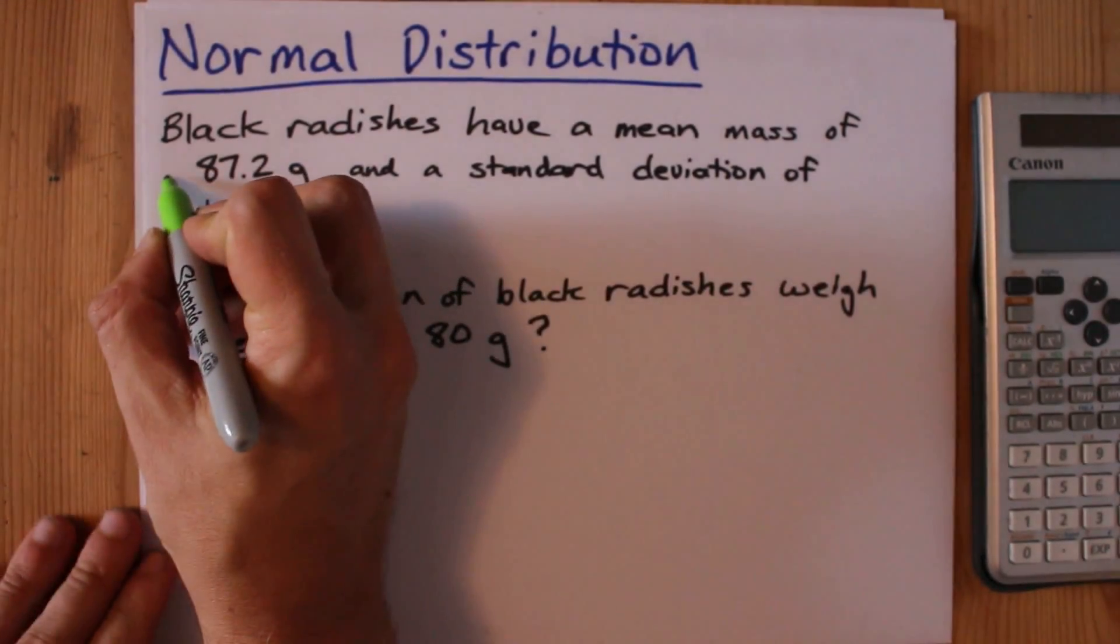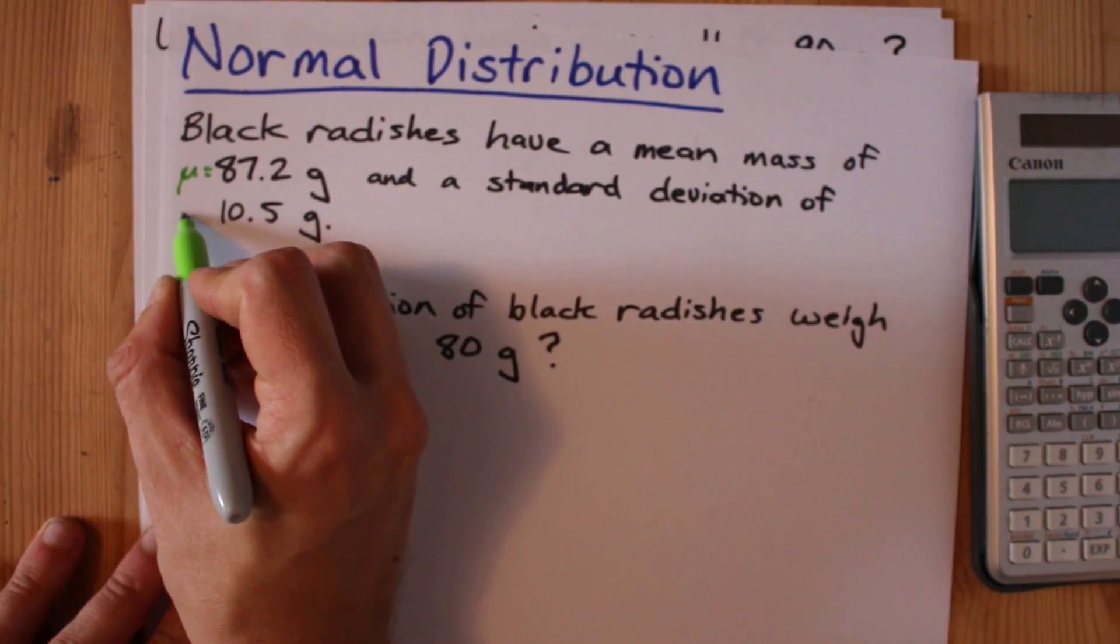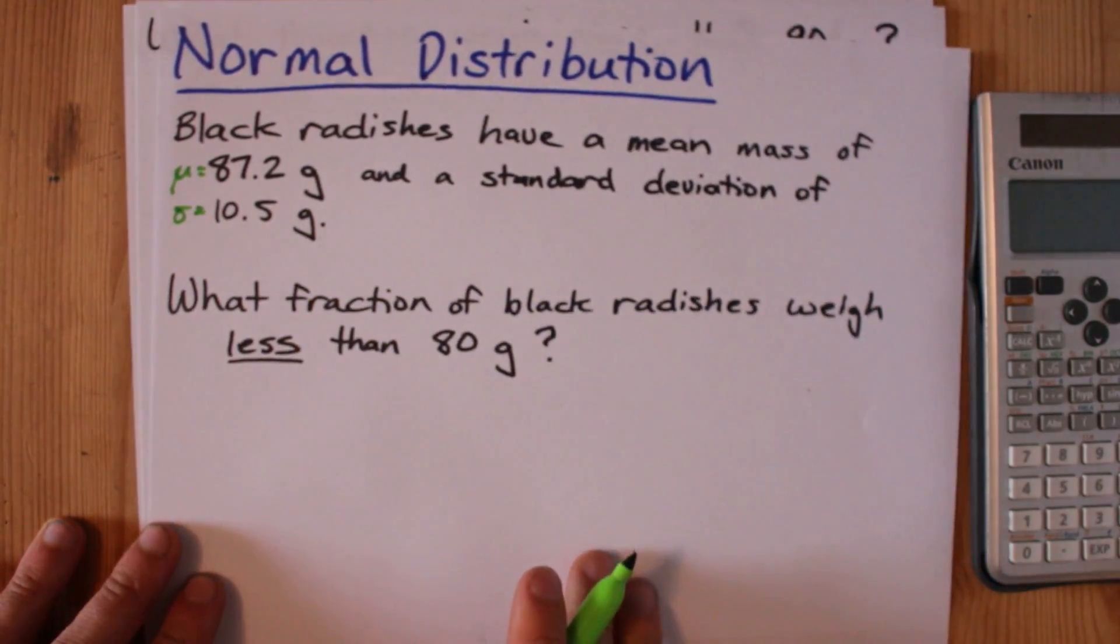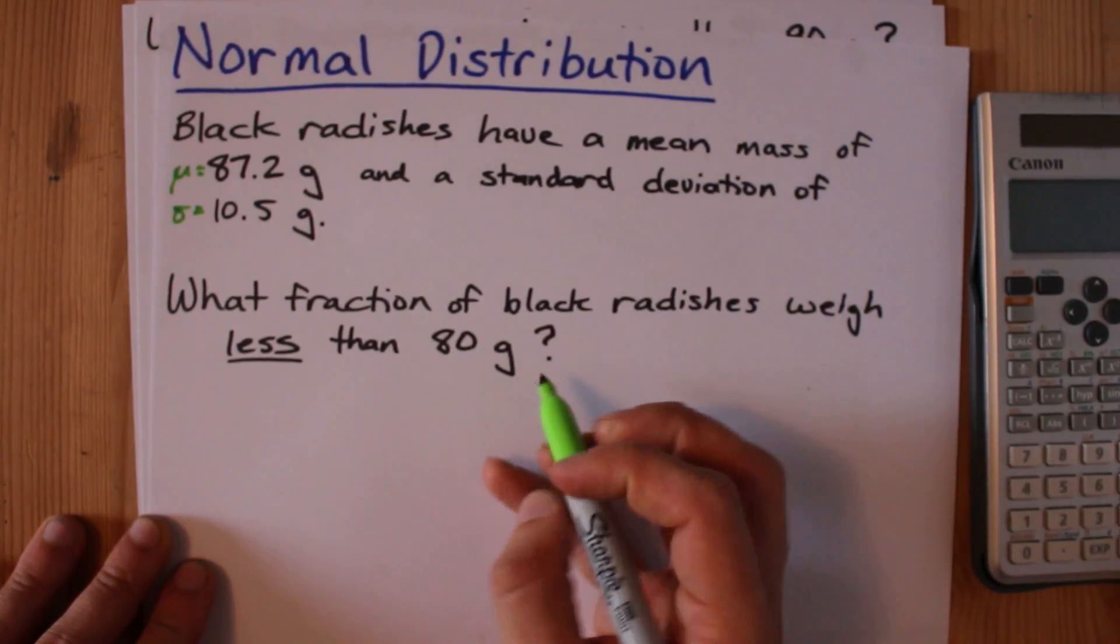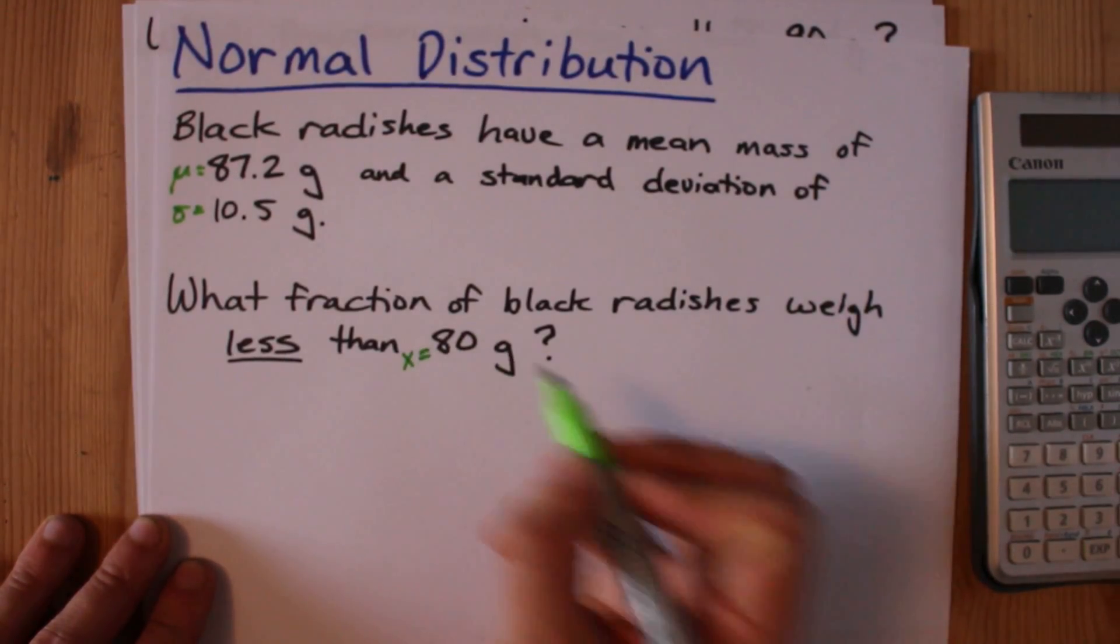The mean gets the symbol mu and the standard deviation gets the symbol sigma. The amount that you're asked about, in this case 80 grams, that's the threshold, is going to be called x.